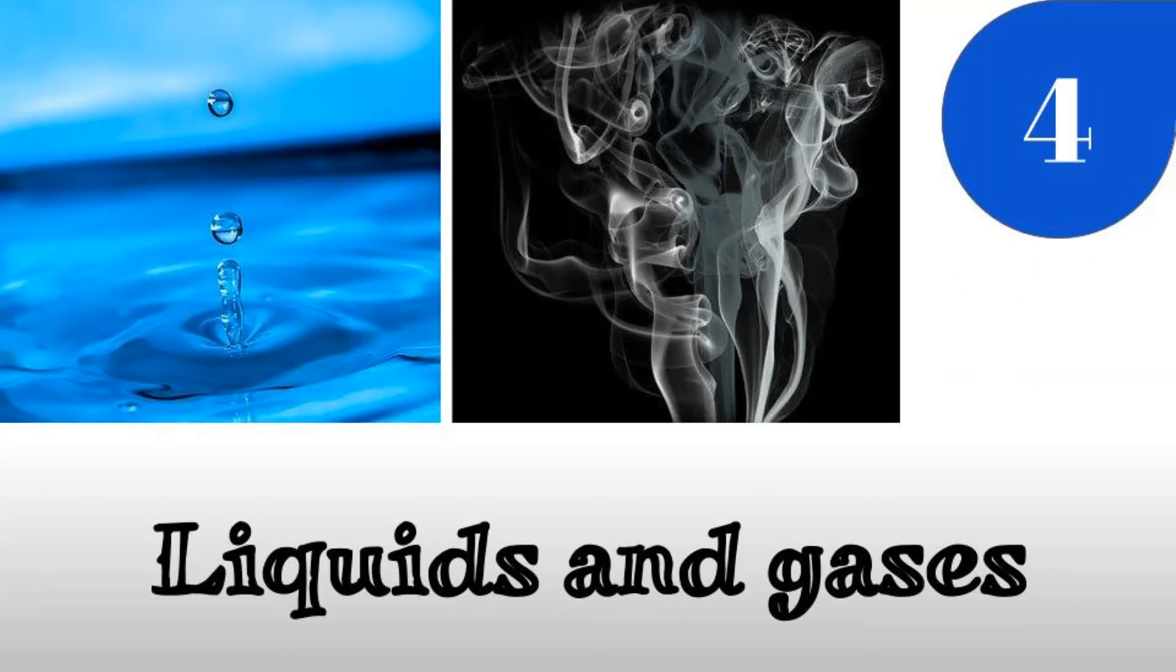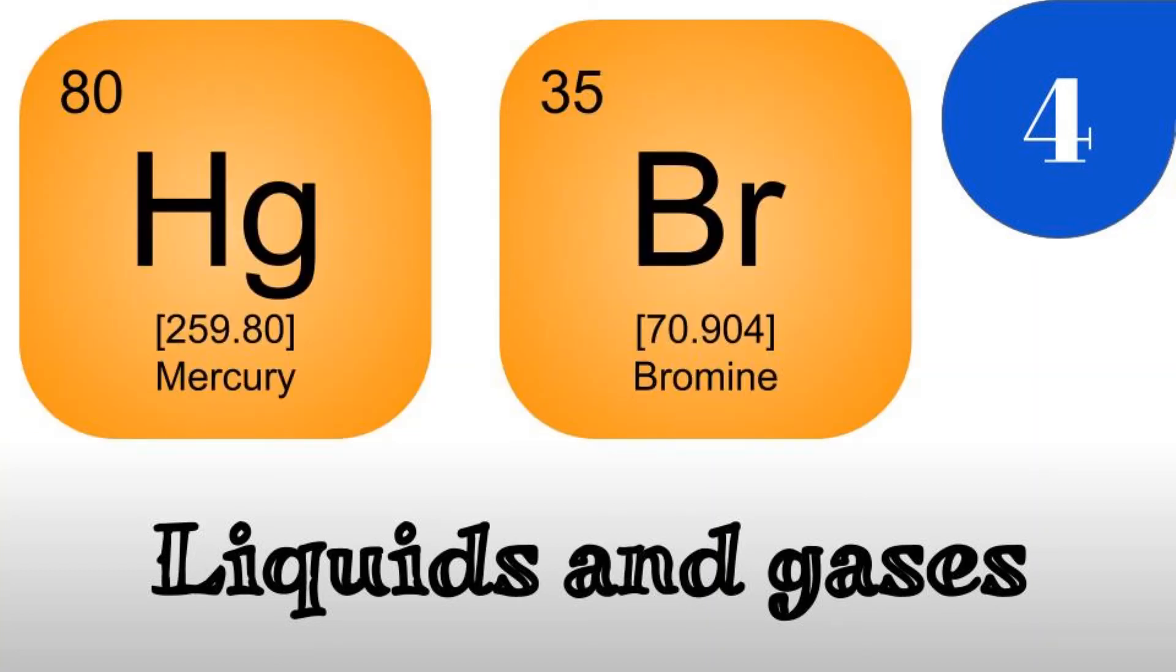Number four: Liquids and gases. Of the 118 elements found on the periodic table, only 13 of them are either liquids or gases at room temperature. The two liquids are mercury and bromine. They are the only elements that are liquids at room temperature on the periodic table.